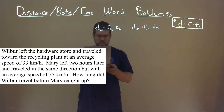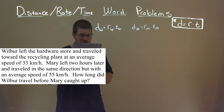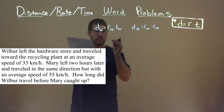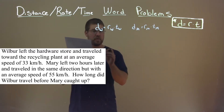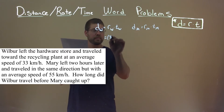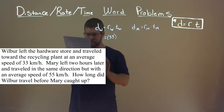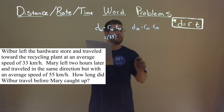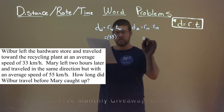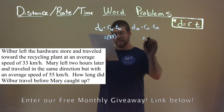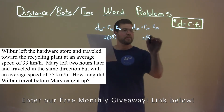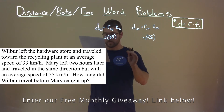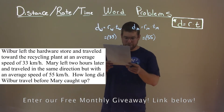So let's plug in what we know. They tell us Wilbur traveled at an average rate of 33 kilometers per hour. They tell us that Mary traveled at a rate of 55 kilometers per hour.